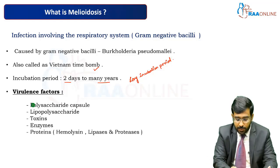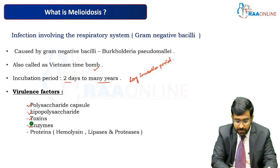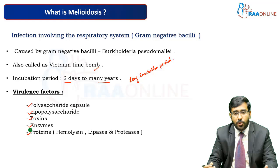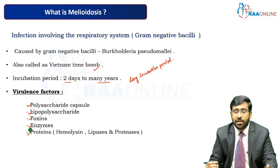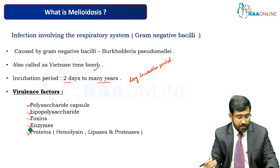The virulence factors include a polysaccharide capsule, lipopolysaccharide, toxin production, and enzyme production. Various proteins such as hemolysin, lipases, and proteases are also involved. Notably, the hemolysin is not prominent on blood agar — the organism will grow on blood agar, but hemolysin will not be well demonstrable in the case of Burkholderia pseudomallei.